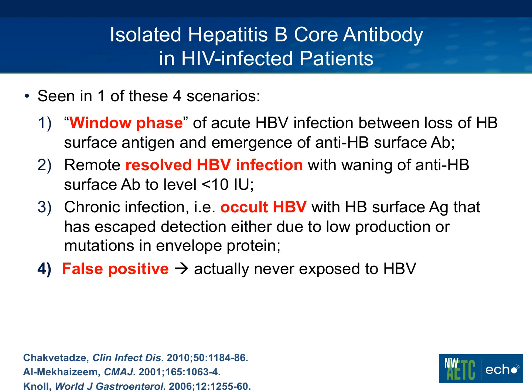Theoretically, there are four scenarios in which you can see isolated core antibody. The first is a window phase. There is theoretically a period of time when the surface antigen has gotten below detectable levels and the surface antibody has not yet quite developed — the seronegative window — where you can sometimes just see an isolated core antibody. Keep in mind we don't really encounter this window phase very often; it's a very discrete period of time in an individual who likely has other clinically apparent manifestations of acute HBV.